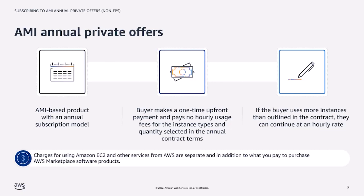Customers can apply one annual subscription to an AWS Marketplace software product to one Amazon EC2 instance. Customers can also continue to launch and run the product using instance types not included in the annual purchase, and will be billed for the additional usage at the AMI product's hourly rate. Charges for using Amazon EC2 and other AWS services are separate and in addition to what you pay to purchase AWS Marketplace software products.